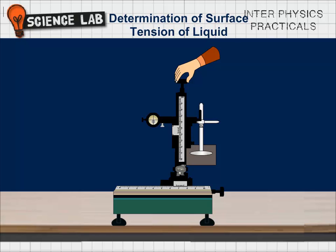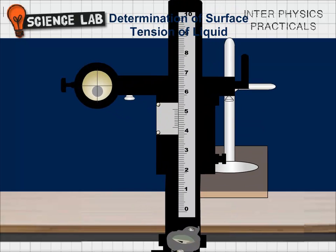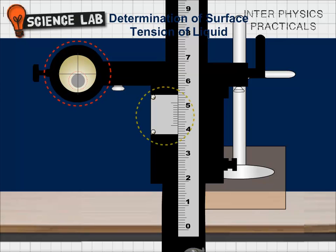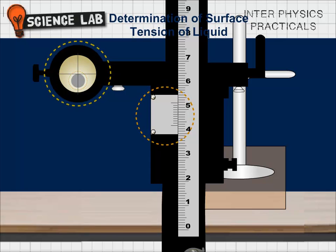Adjust the vertical position of the microscope lens until the vertical cross wire looks like a tangent to the circular bore on the top. Note the readings of the vertical scale and vertical vernier.